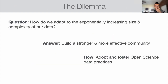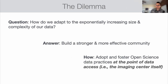From the imaging center perspective, they've kind of solved — or are working towards solving — a key dilemma: how do you adapt to the exponentially increasing size and complexity of data and analysis? You have to build a stronger, more effective research community by adopting and fostering open science data practices, critically at the point of data access itself — at the imaging center. By providing users with open science-compliant data, it allows them to engage in those practices with less effort in their labs and allows for greater sharing. This is why the center has jumped all in on BIDS as a data format.